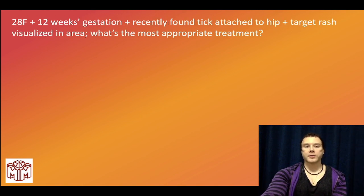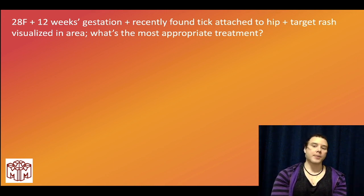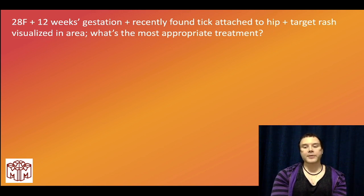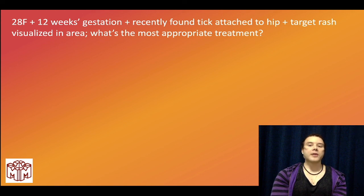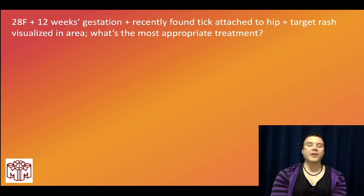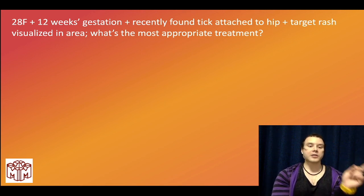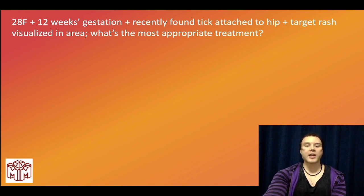28-year-old female, 12 weeks gestation, recently found a tick attached to her hip, target rash visualized — most appropriate treatment? This is Lyme disease. We do not give doxycycline to pregnant women or children eight or younger; the answer would be amoxicillin or ceftriaxone (both safe during pregnancy). USMLE won't give you both as answer choices. In contrast, for Rocky Mountain spotted fever, we give doxycycline even to pregnant women and children eight or younger.